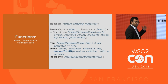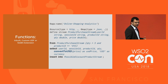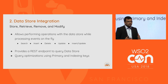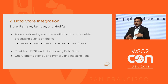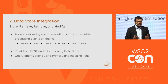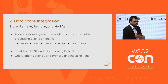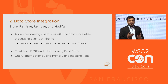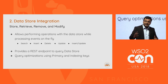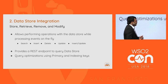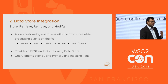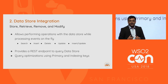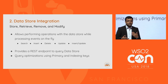Now we've covered the data pre-processing part. The next pattern is data store integration. Using a data store integration pattern, you can perform search, insert, delete, and update operations on top of a data store. The data store can be an in-memory store, RDBMS, or MongoDB — several data store types are supported. You can also perform query optimizations using primary key indexes and index keys to access, search, or delete data quickly.